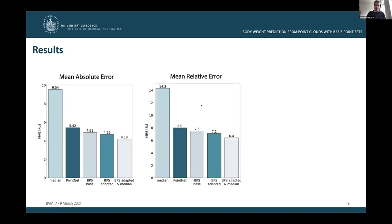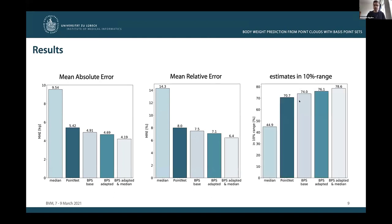Taking a look at the mean relative error, we observe exactly the same trend. The BPS base outperforms median and PointNet baseline, and the adapted sampling scheme and the median yield further improvements, such that the top mean relative error is at around 6.4%. And finally, considering the percentage of estimates within a 10% error range, we again have the same trend whereby the top performing method reaches a score of almost 80%.